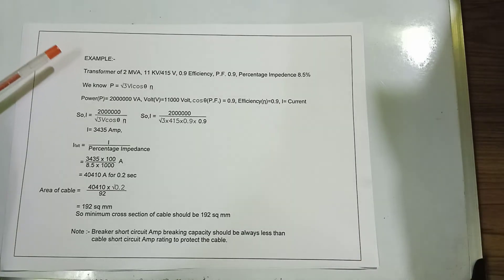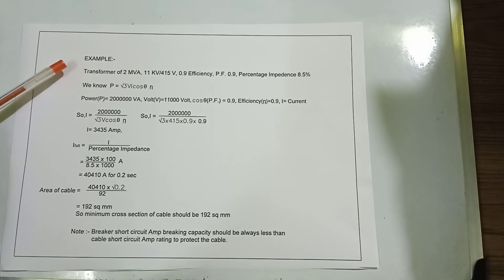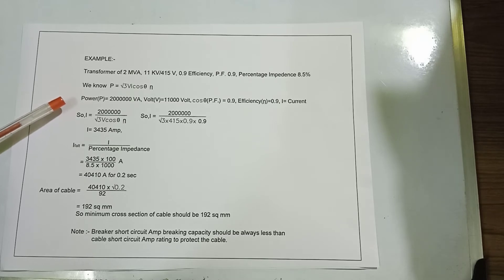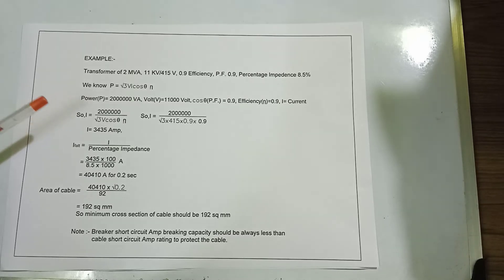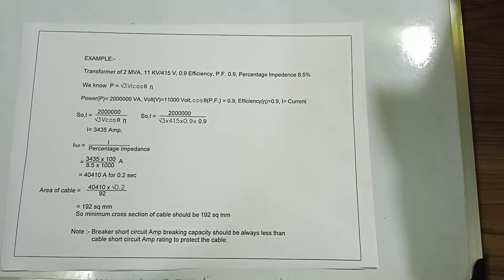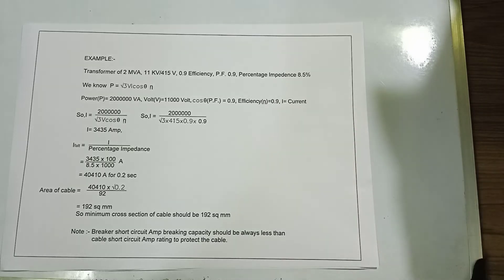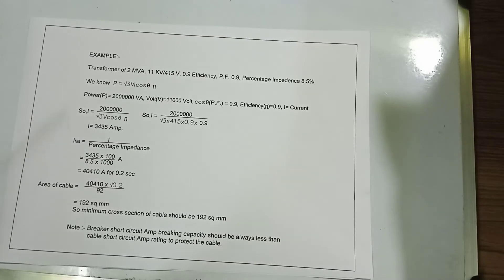Here is an example: a transformer of 2 MVA, 11 kV by 415 volt, efficiency 0.9, power factor 0.9, and percentage impedance 8.5%. We use the formula P = √3 × V × I × cos θ × efficiency.